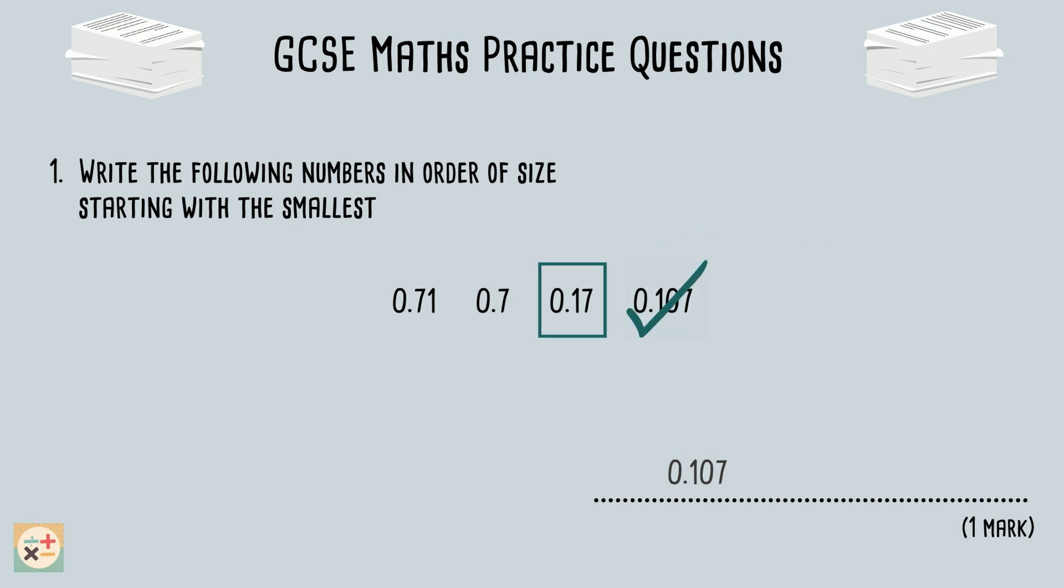We already know that this number is smaller than the first two numbers, so we can write this out on the answer section too. Now let's compare the two remaining numbers. We've already compared the first digits after the decimal point, 7. So let's move along to the second digit.